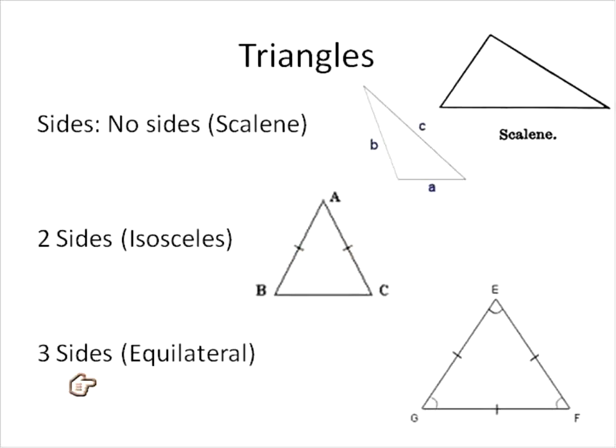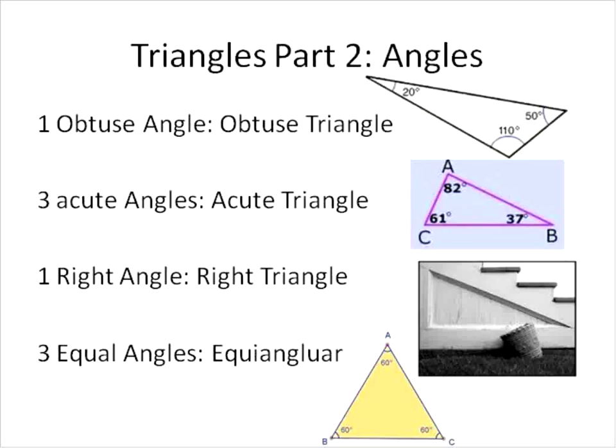An equilateral triangle, we sort of talked about this one already. Equilateral means that all three sides are the same length. It's also called a regular triangle. All three sides, same length. So that's one way to classify triangles, by the length of sides. The other way is by the angles that are in the triangles.